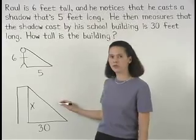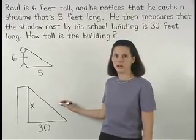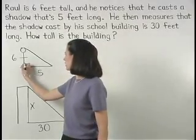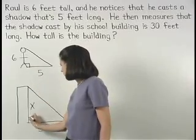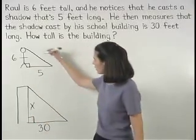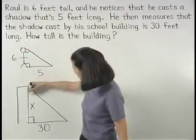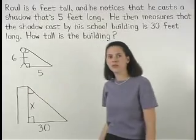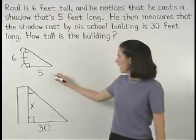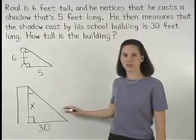Notice that the two triangles that we've drawn are similar because they both have right angles and the shadows are cast at the same angle.